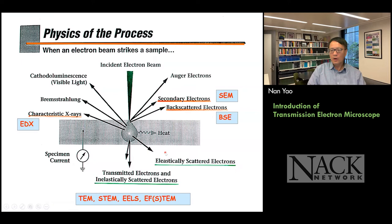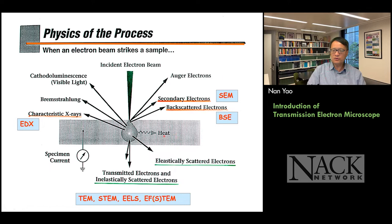When we talk about electron microscopy, we always ask what we can learn and how the system works. This diagram can extend to any technique you use to study your materials. Basically, you have an incident probe — it can be light, an electron beam, ions, or x-rays — and you interact with your sample. Through this interaction, you generate all kinds of signals. The signals include electrons that can elastically bounce back, such as backscattering electrons from the sample surface. You also generate secondary electrons, Auger electrons, and characteristic x-rays. Each signal gives you unique information about your sample.